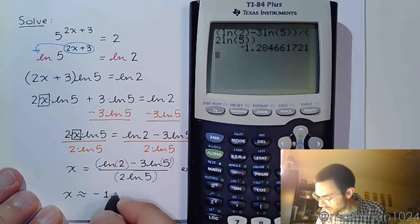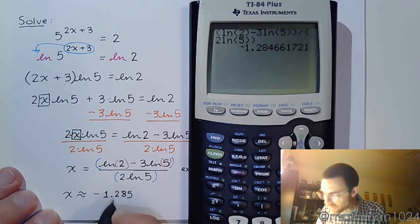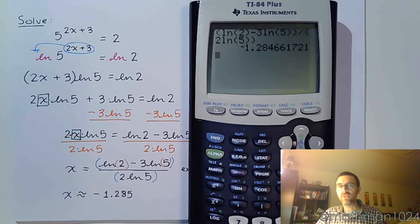So this is saying that the answer is approximately negative 1.285 when rounded to the nearest thousandth.